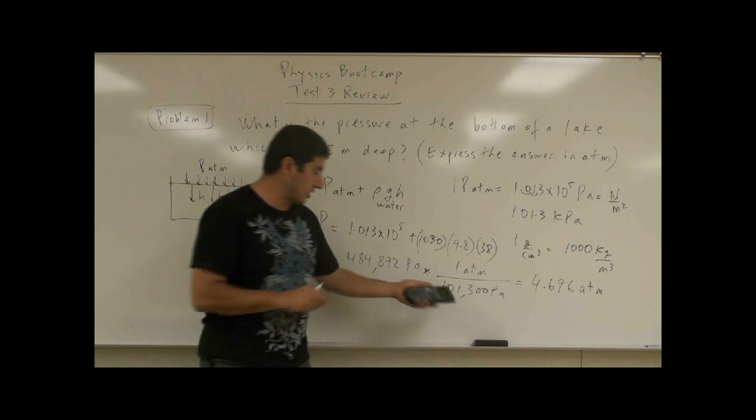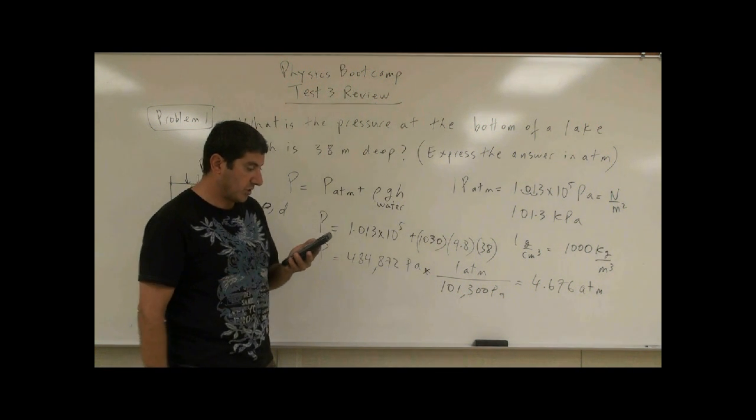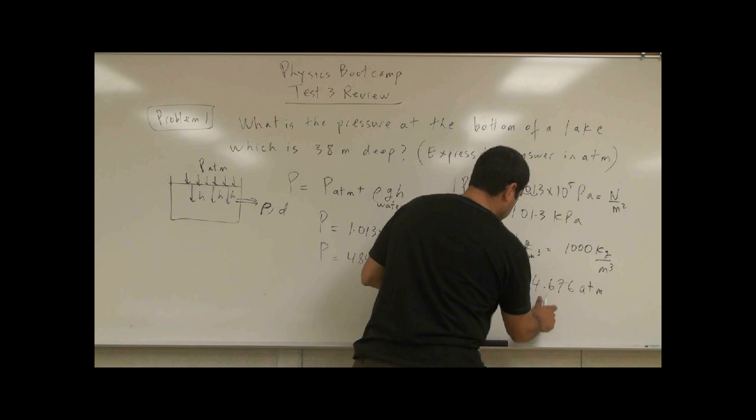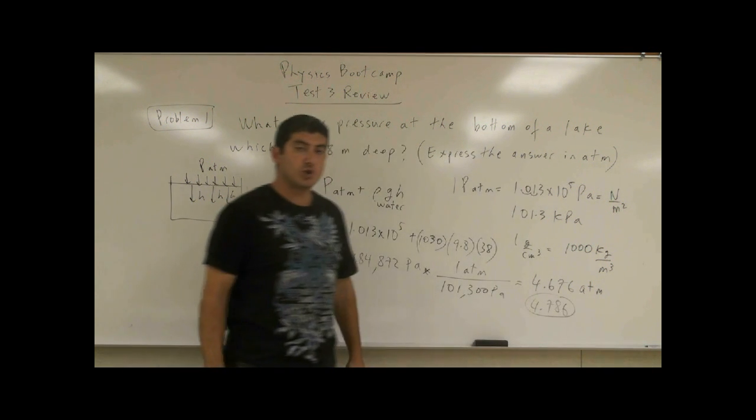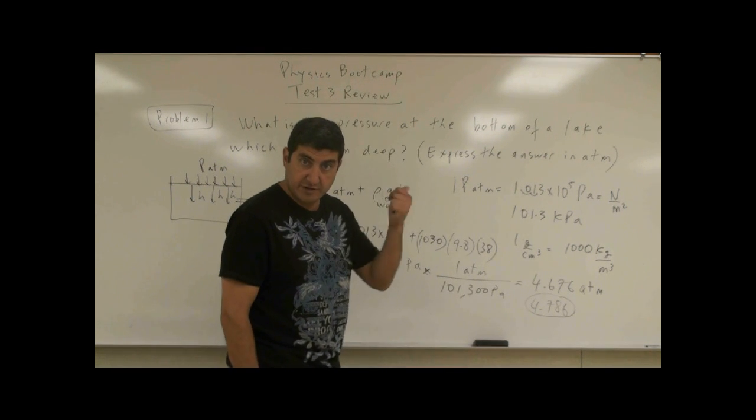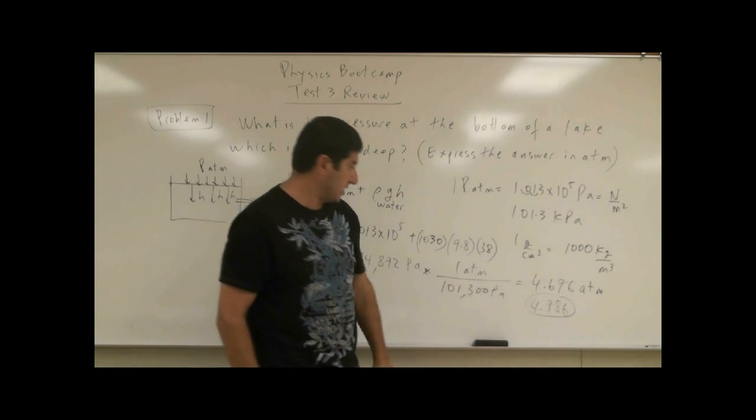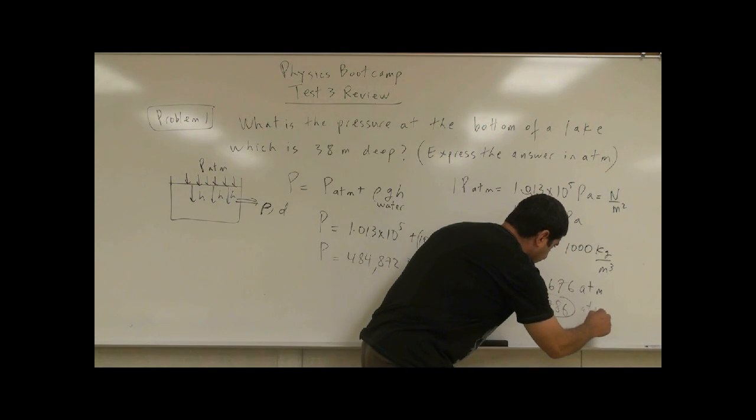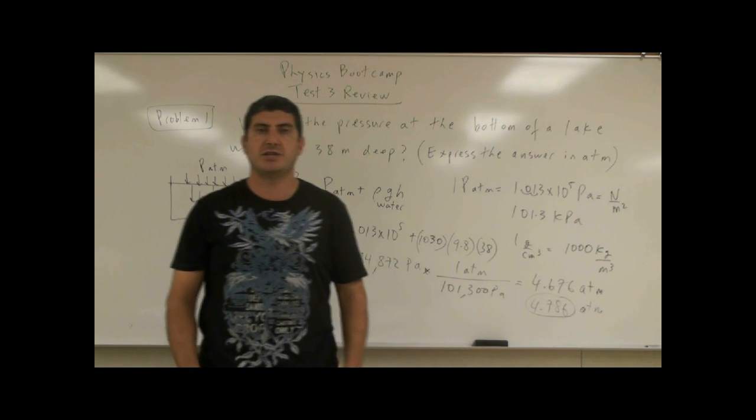You divide that by 101,300. You get 4.786. So if it's a saltwater lake, it'll be 4.786. You can see that the pressure for sea level, if it is salty water, will be higher than the pressure for fresh water. So now you can see how to calculate these.